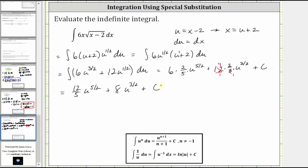Which means in terms of x, the antiderivative is 12 fifths times the quantity x minus two to the five-halves plus eight times the quantity x minus two raised to the power of three-halves plus c. I hope you found this helpful.